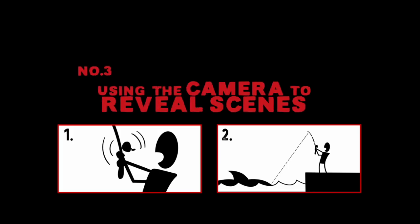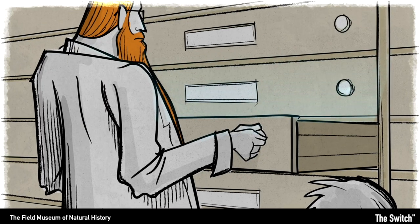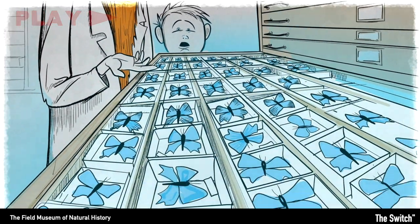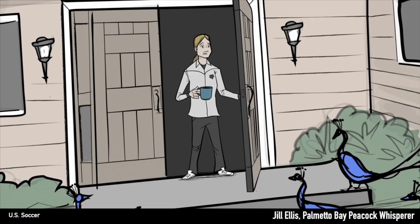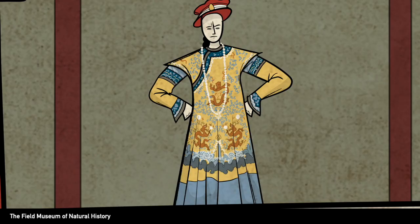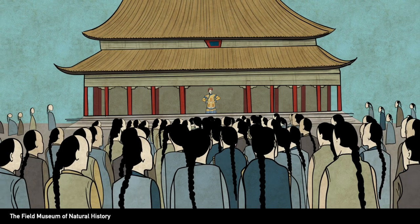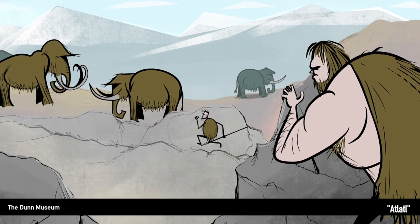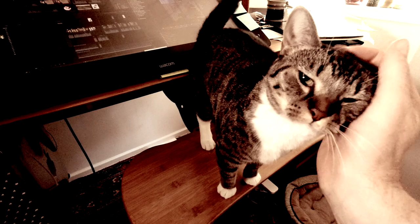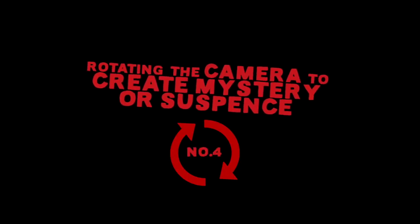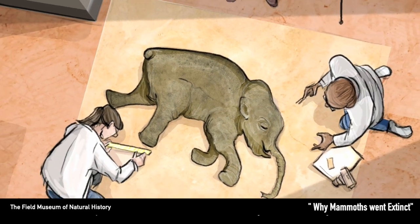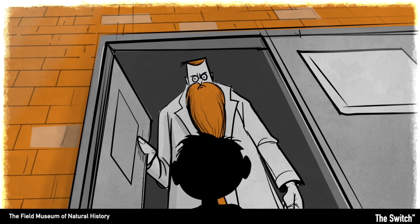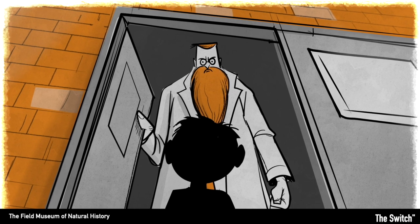Use the camera to reveal scenes! In this scene from The Switch, the scientist is opening up all the drawers and I wanted to get the reaction shot of Bill here and then pull back to reveal what's inside. Same idea for the reveal of all the peacocks that show up at the door for breakfast, or this ancient Chinese Emperor addressing his people, or the scene where we have the mammoth being watched by a caveman who's being watched by another caveman. Sometimes you want to add a little bit of mystery or suspense or unease to your shot, and an easy way to do that is just rotate the camera slowly — it's perfect for a scene like this where there isn't a whole lot of animation going on.